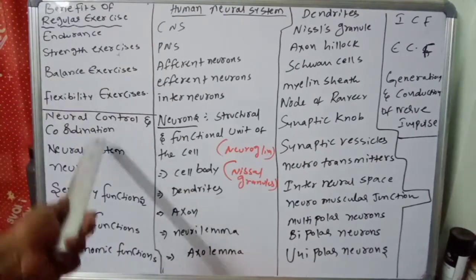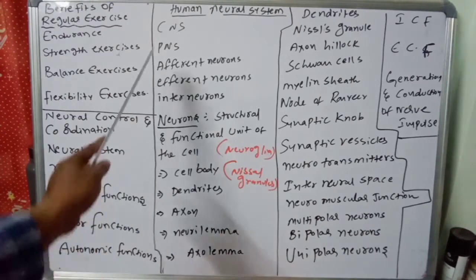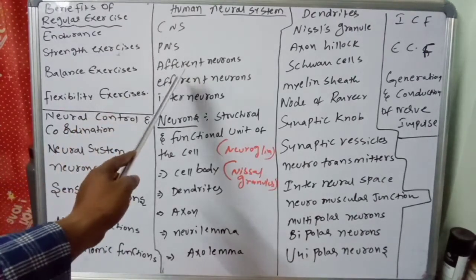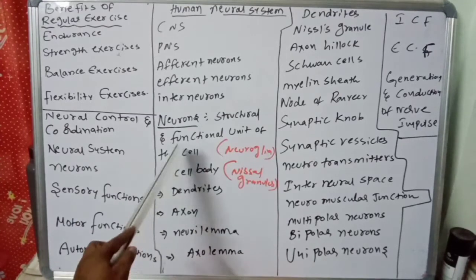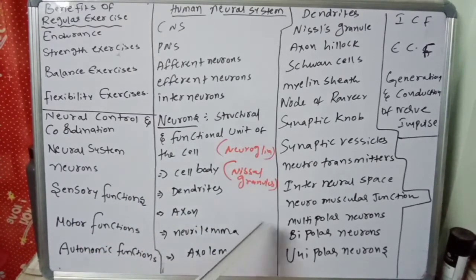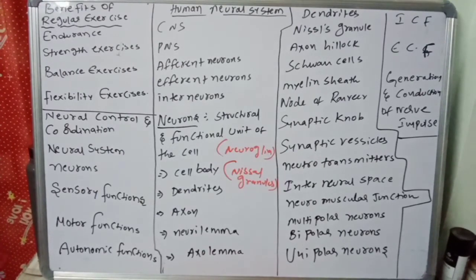To summarize today's class: we covered exercise importance, sensory and motor functions of neurons, autonomic functions, the CNS and PNS, different interneurons, neuron cell structure, multipolar, bipolar, and unipolar neurons, inter-neuronal space, and synaptic vesicles. All this information must be remembered and practiced sincerely from the textbook.